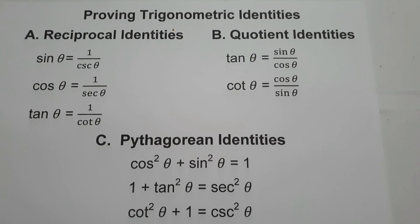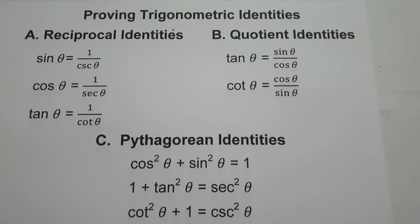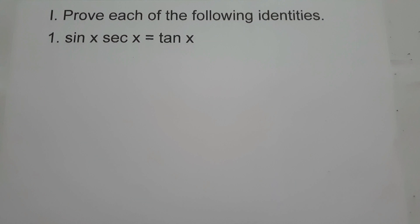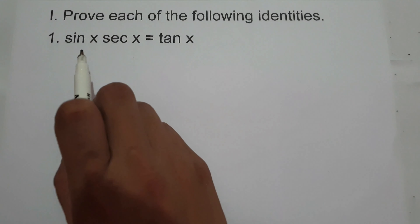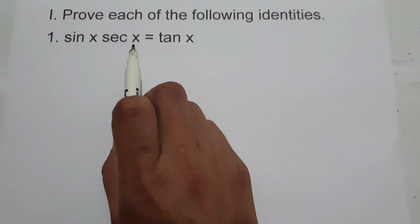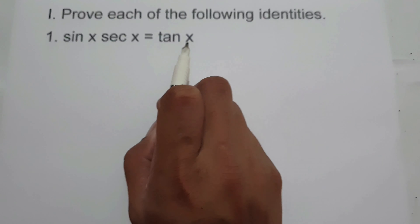So these are the basic identities that we need to remember in order for us to prove trigonometric identities. So let's start and let's have an example. On the first example, we are going to prove sin x multiplied by secant x equals tangent x.